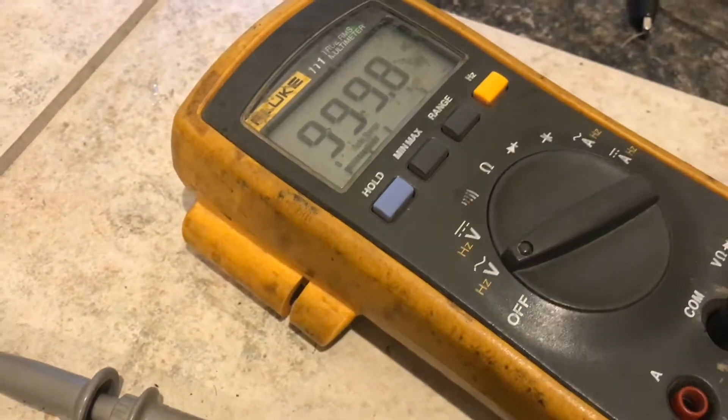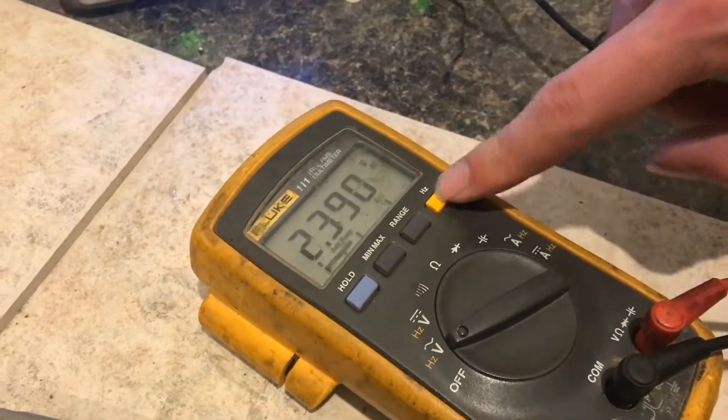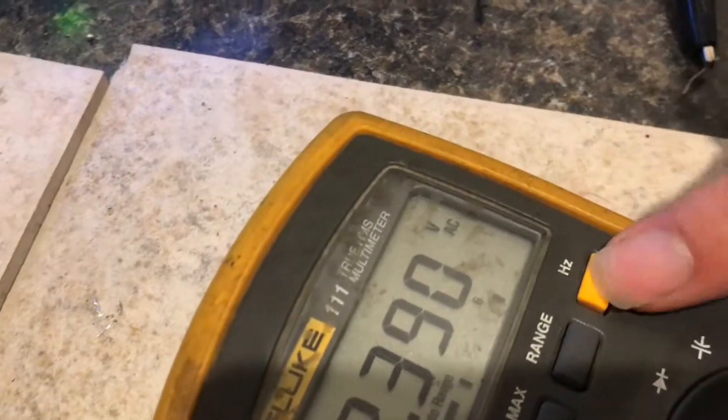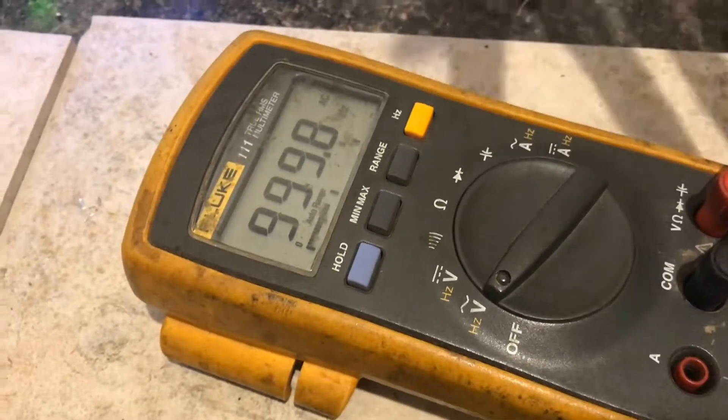The little squiggly line above it means you can use this setting to measure either voltage, AC voltage, or if you hit the Hertz button, you switch to the alternate mode, which is measuring frequency.